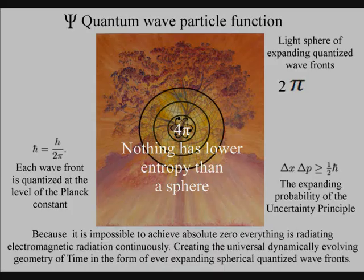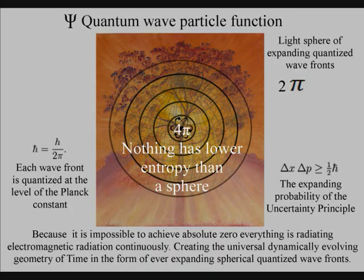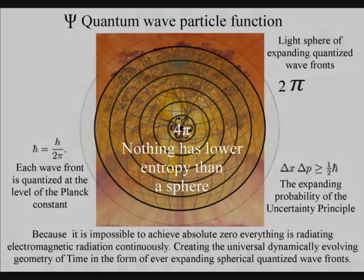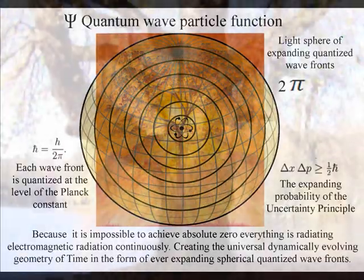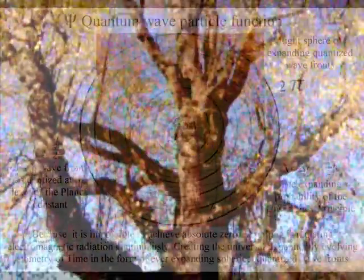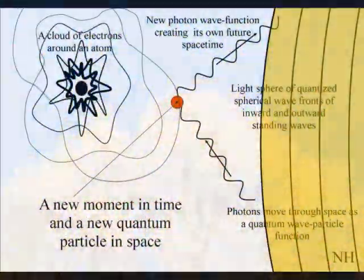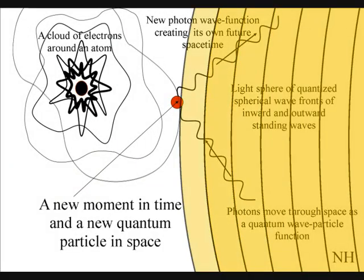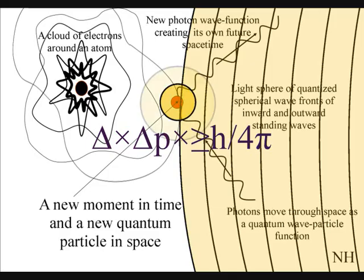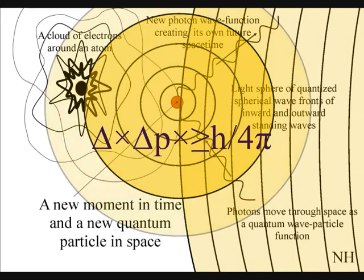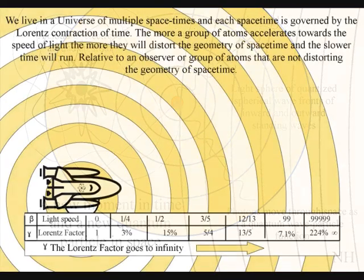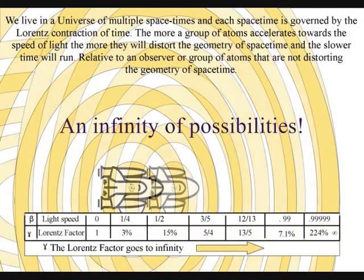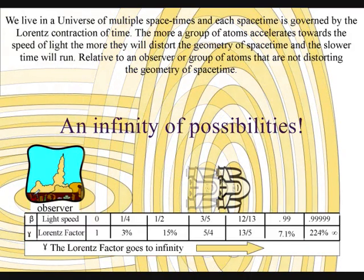The second law of thermodynamics falls out of this theory. The organization for the spontaneous disorganization of entropy is formed by the spherical symmetry of the quantum wave particle function. The spontaneous absorption and emission of light forms the flow of time, with photon energy cascading down, forming greater degrees of freedom for the flow of entropy.